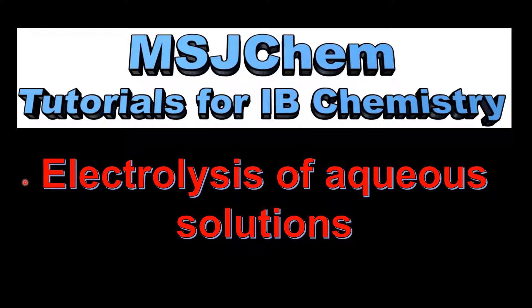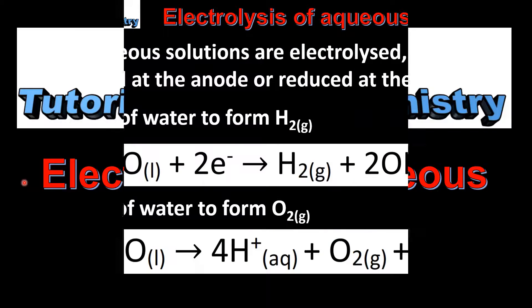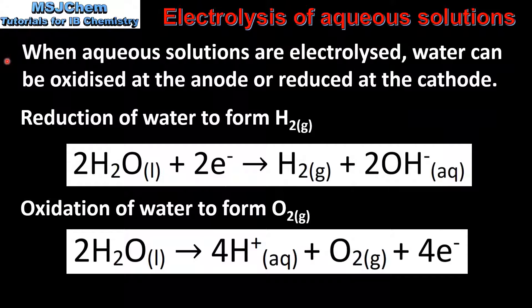This is MSJChem. In this video I'll be looking at the electrolysis of aqueous solutions. When aqueous solutions are electrolyzed, water can be oxidized at the anode or reduced at the cathode. Here we have the equations for the reduction of water to form hydrogen gas and the oxidation of water to form oxygen gas.